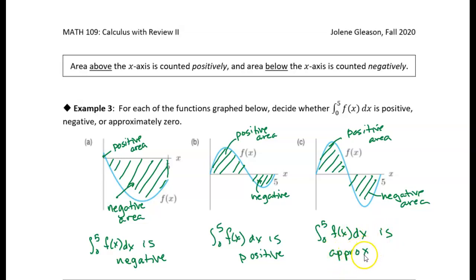So if they're approximately equal, then they're just going to cancel each other out. We add the positive area and the negative area, and we get zero.